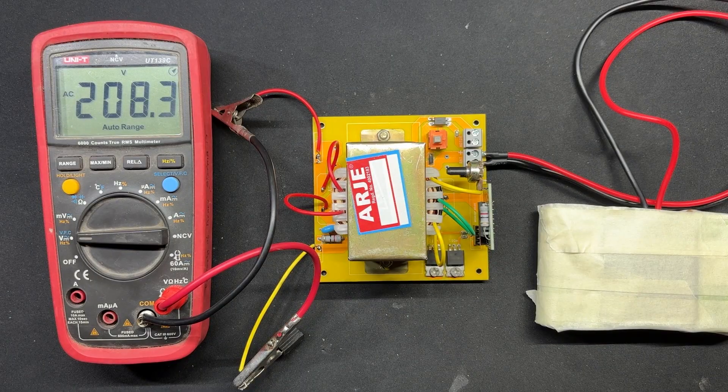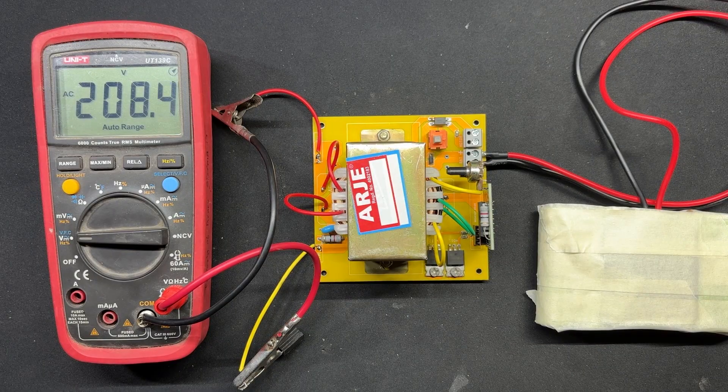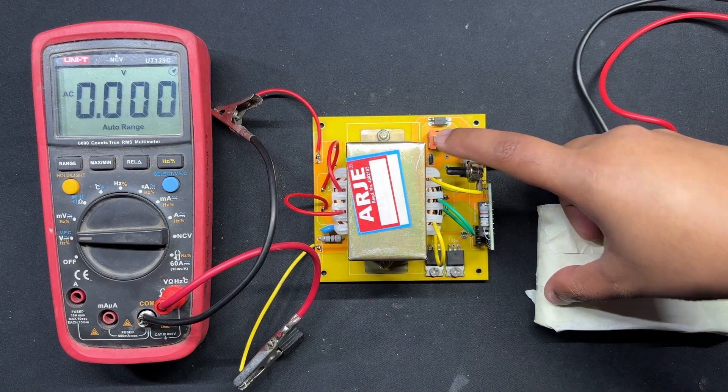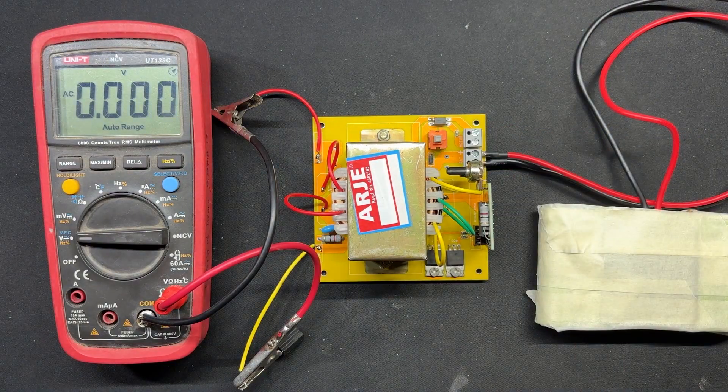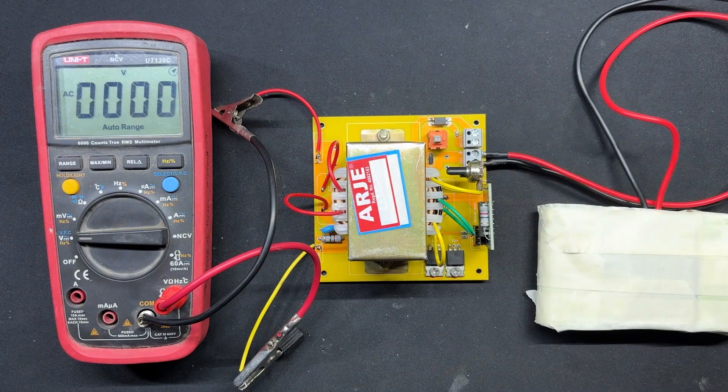By pressing the ON-OFF push switch, our device gets ON and we get a voltage measurement on our multimeter. We get 208V AC, which can be adjusted using the potentiometer to change the frequency of CD4047 IC.